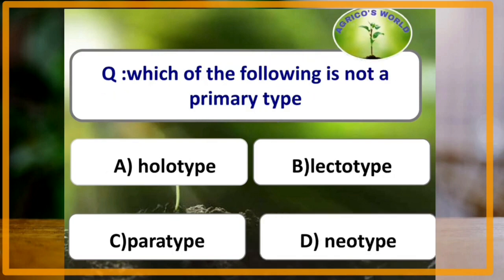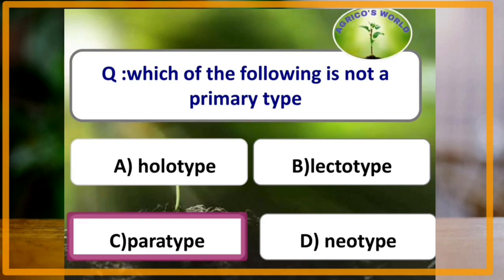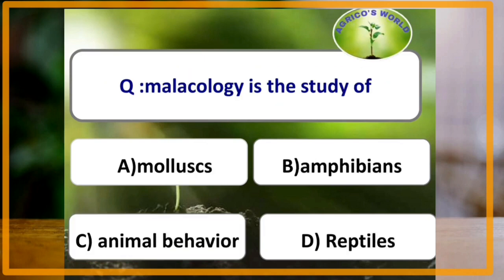Which of the following is not a primary type? The answer is paratype. Malacology is a study of molluscs.